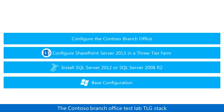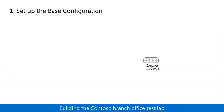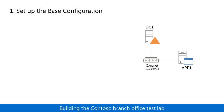Now let's build it out. In step one, you start with the corpnet subnet of the base configuration, which includes DC1, the Active Directory Domain Services or ADDS Domain Controller, App1, a web and file sharing application server, and Client1, a client computer.